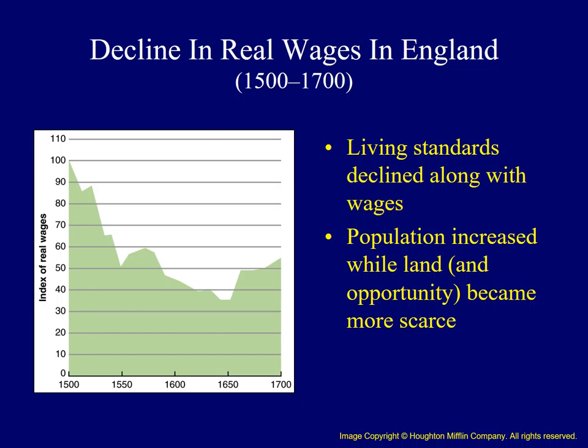You're probably asking, why would so many people take this risk? Well, they weren't necessarily aware of the survival rate of other servants, but more importantly, there were important push factors in England which influenced this migration. This graph shows the decline in real wages in England between 1500 and 1700. There just weren't as many opportunities for advancement for many in England, and they took their chances and traveled, often to the Chesapeake, in hopes of making it there.